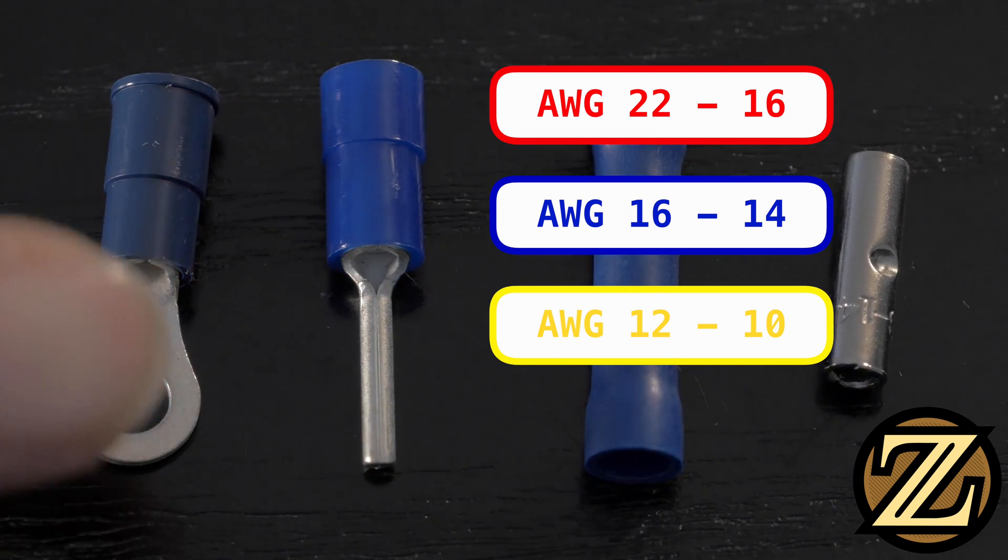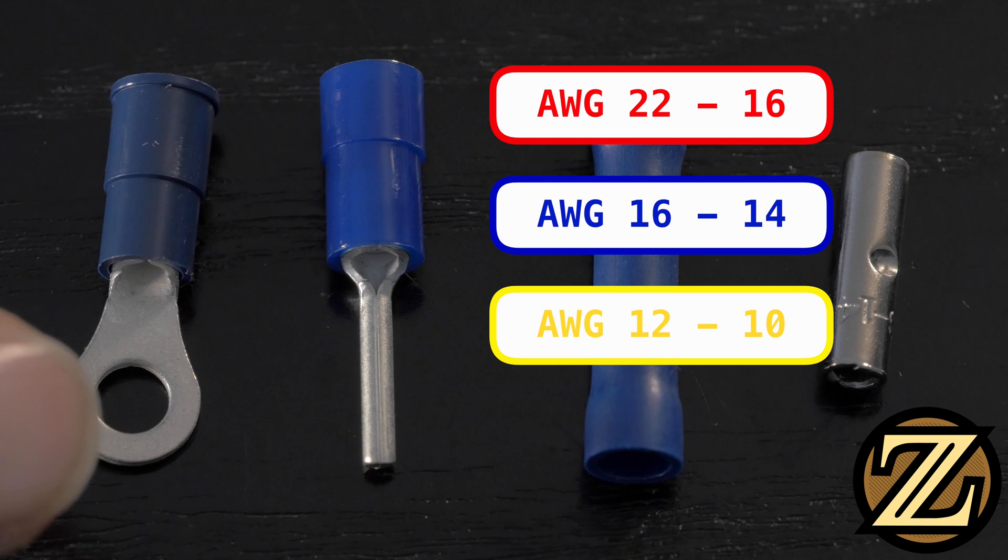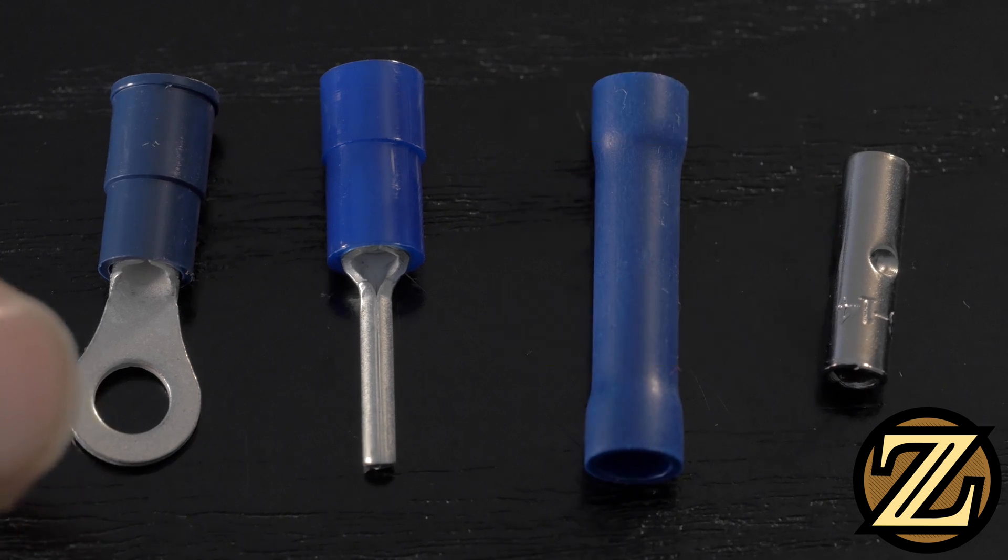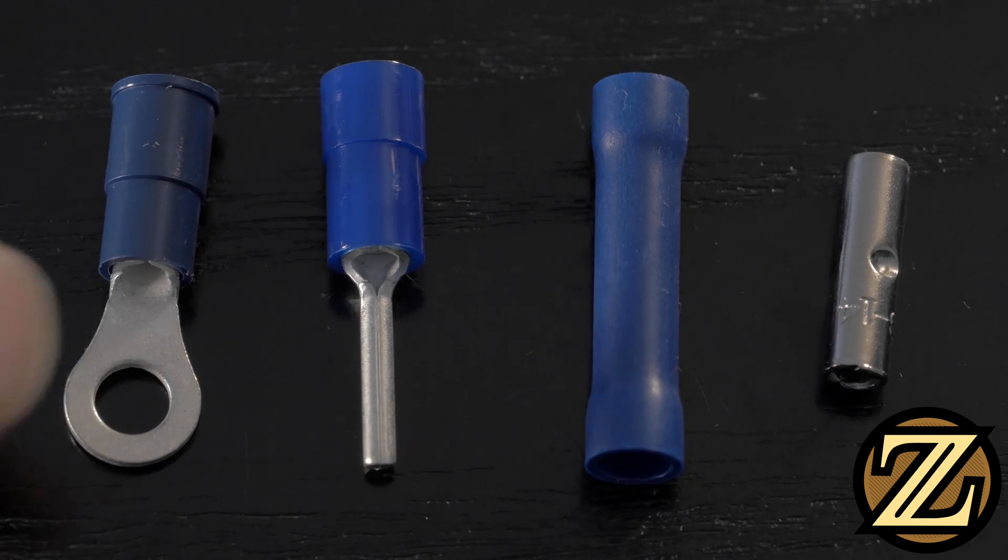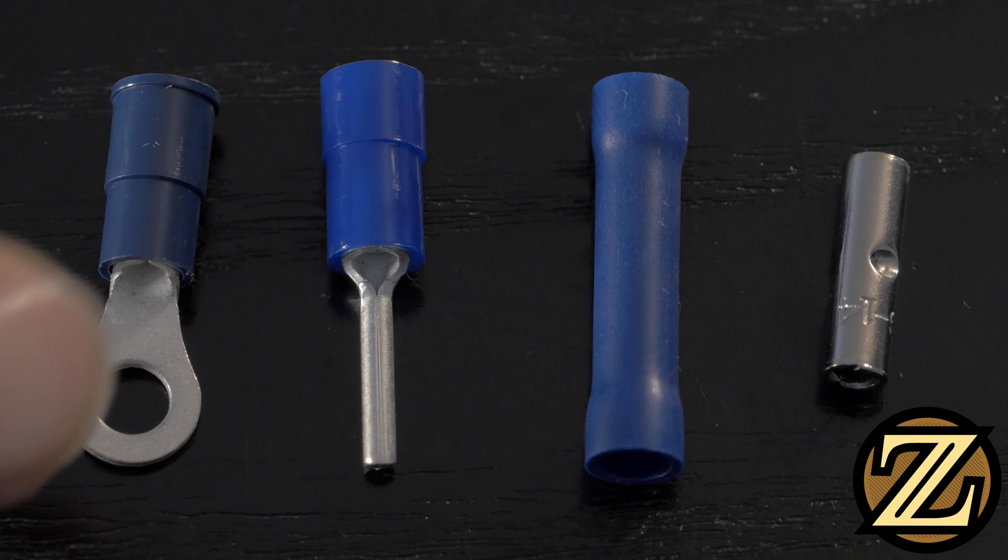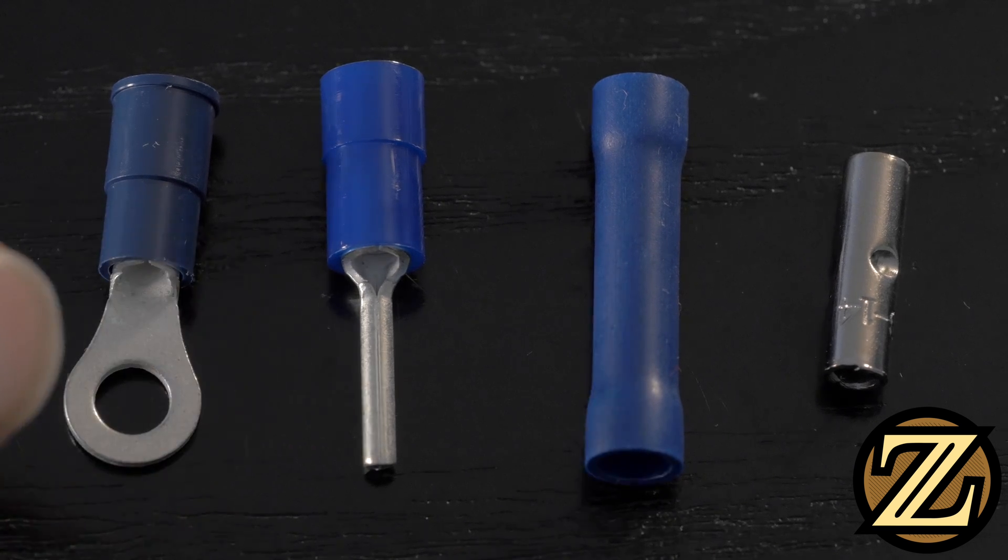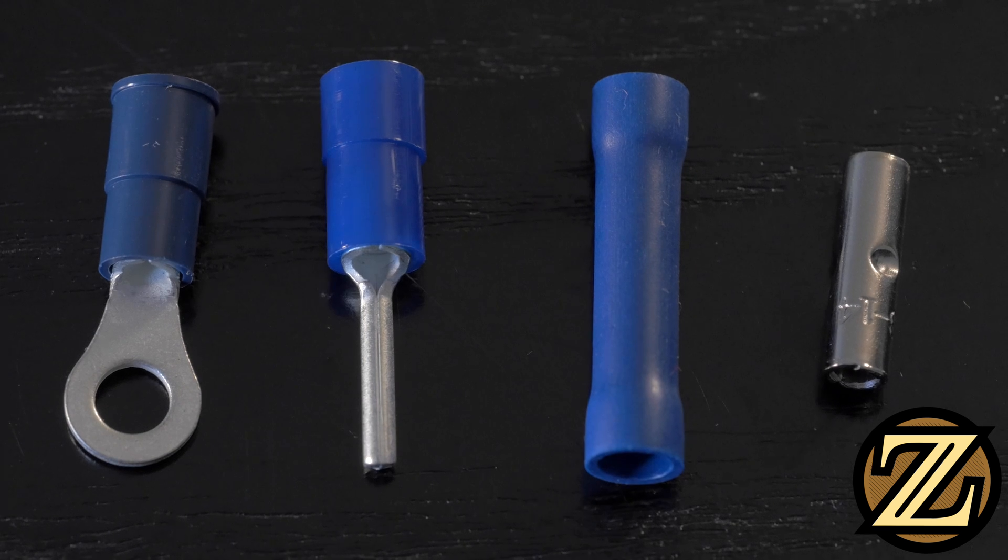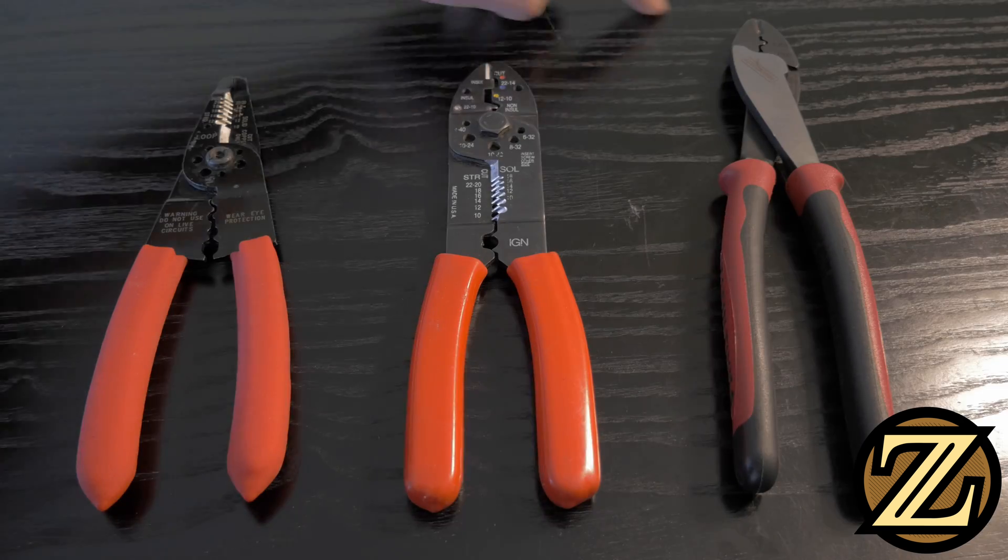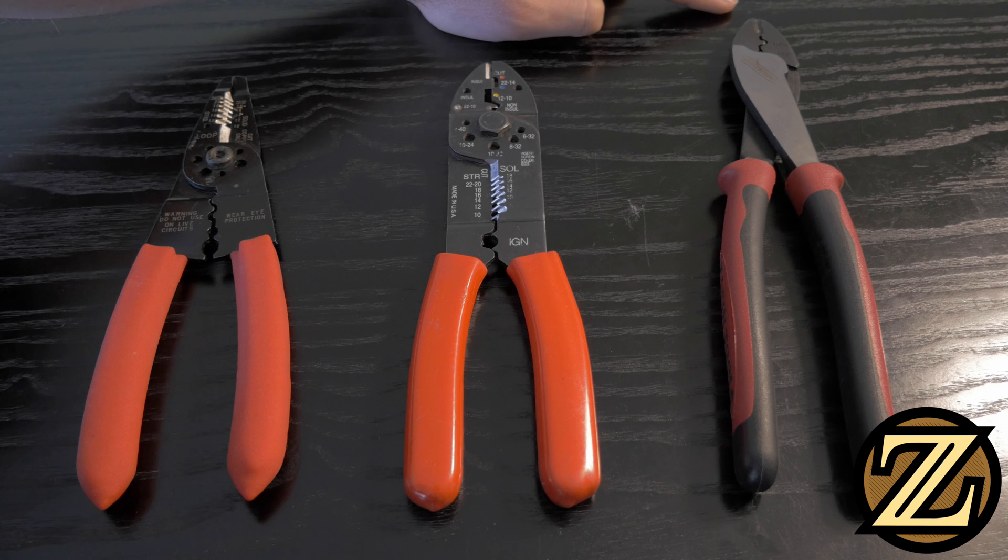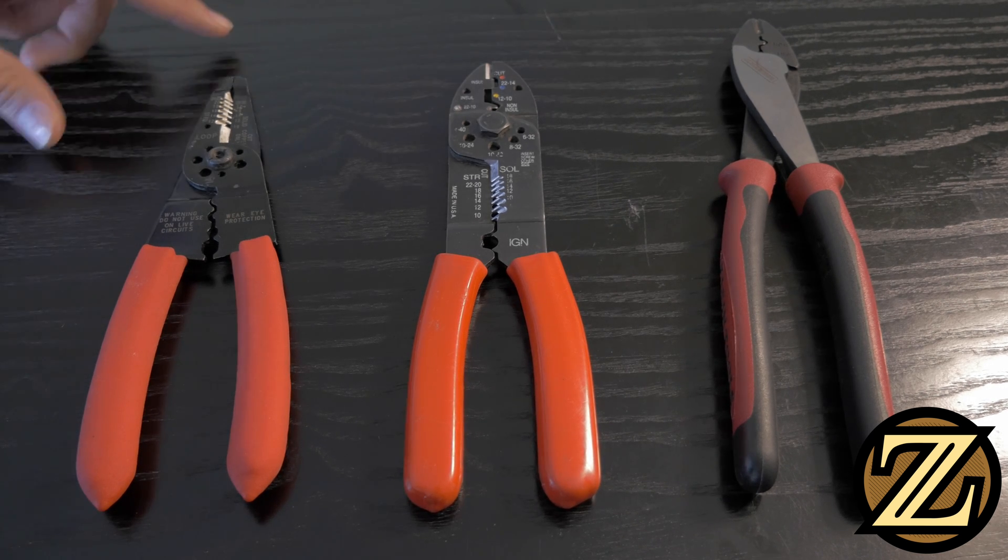Make sure you have the right size terminal for the wire that you're working with, and also make sure you have the right kind of wire for the terminal that you're going to be applying to it. All of these are designed for copper only wire, so you need to make sure that you're using copper wire to make sure you get a good crimp. Here I have three different crimping tools. The best tool is the one that offers the greatest amount of leverage so you can get the highest amount of crimping pressure.